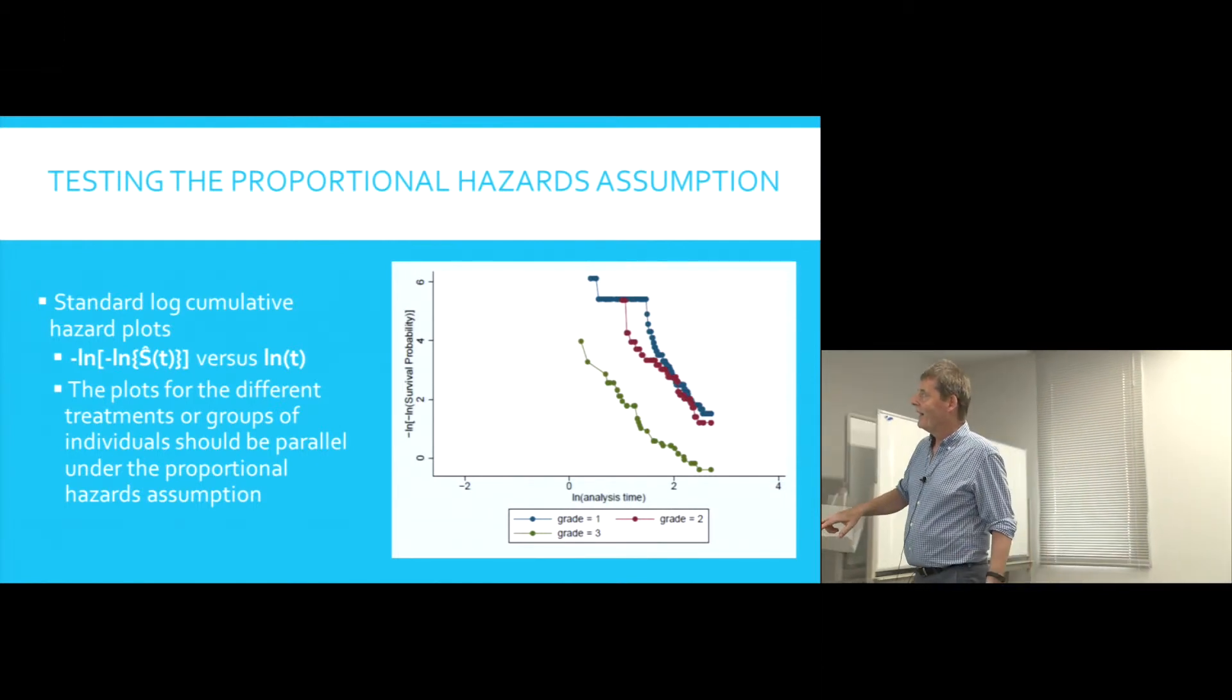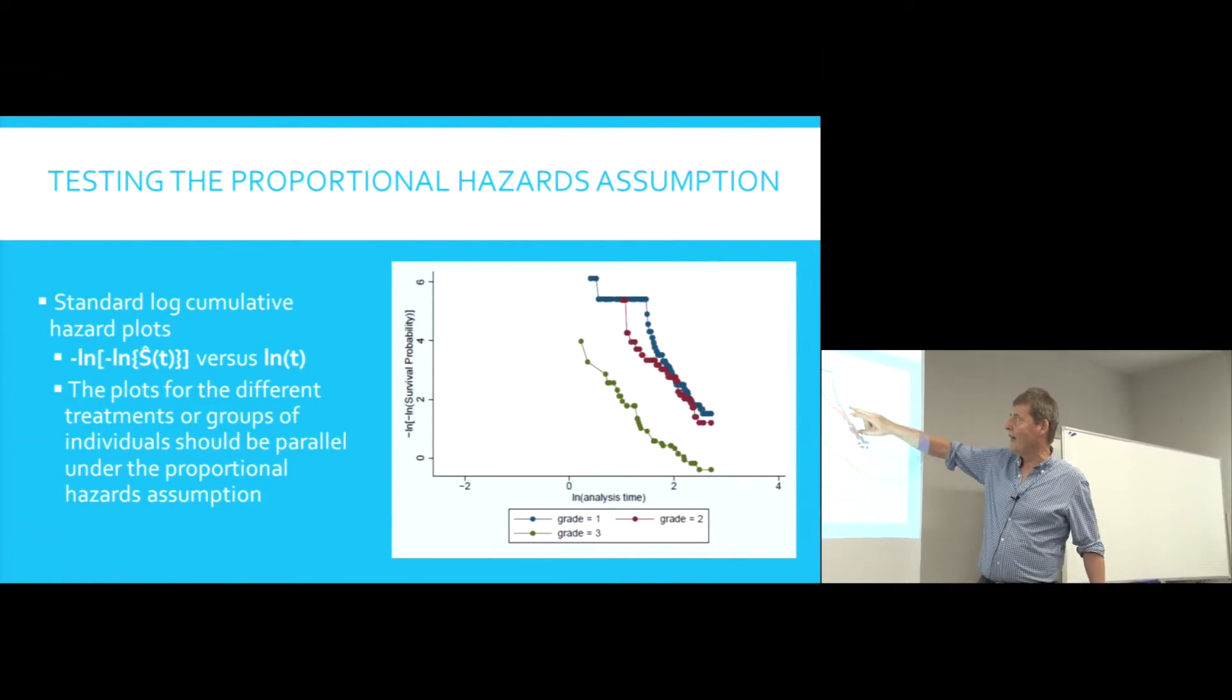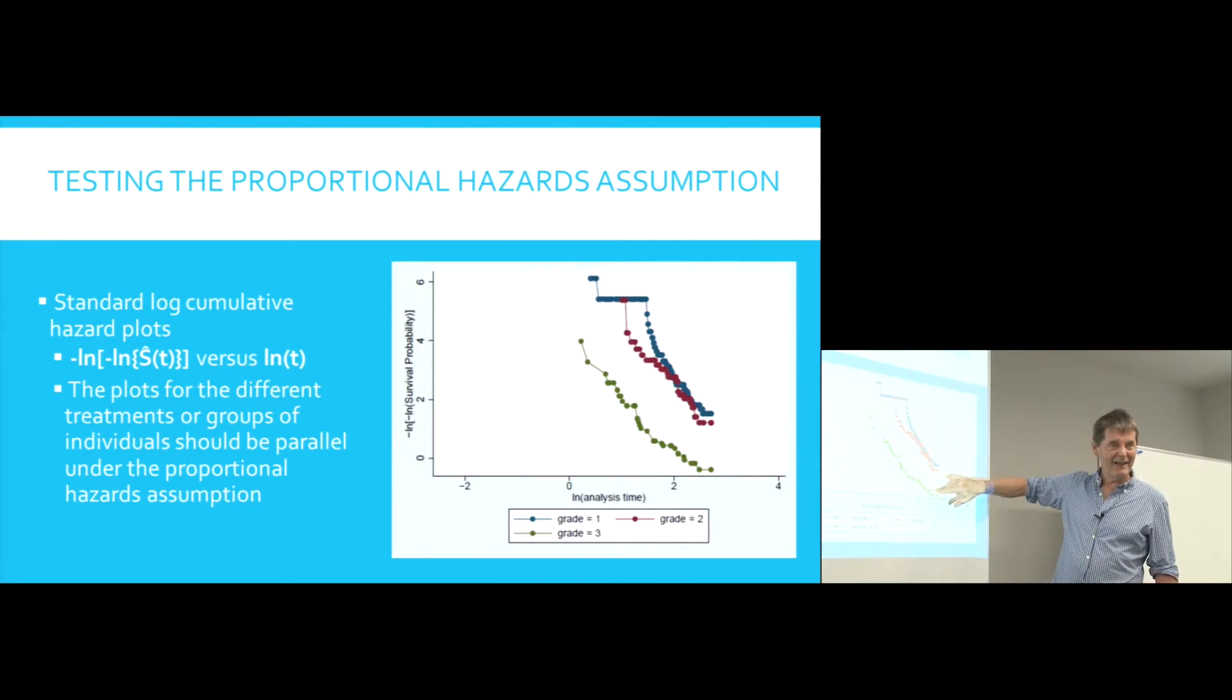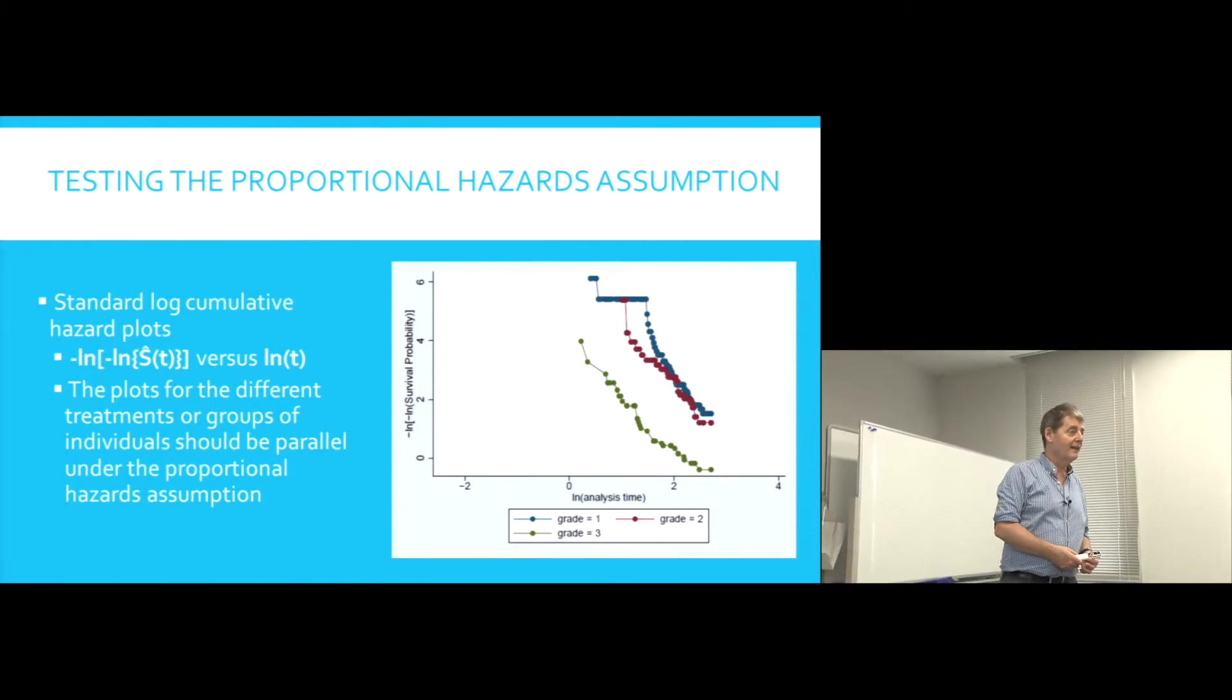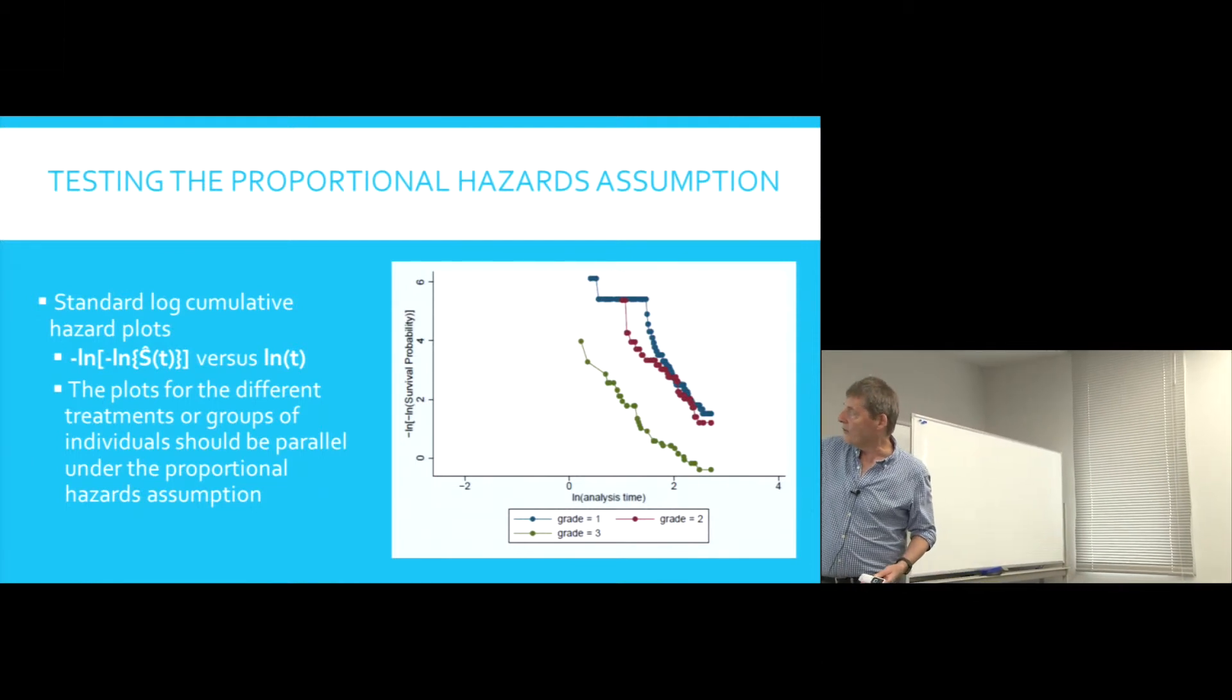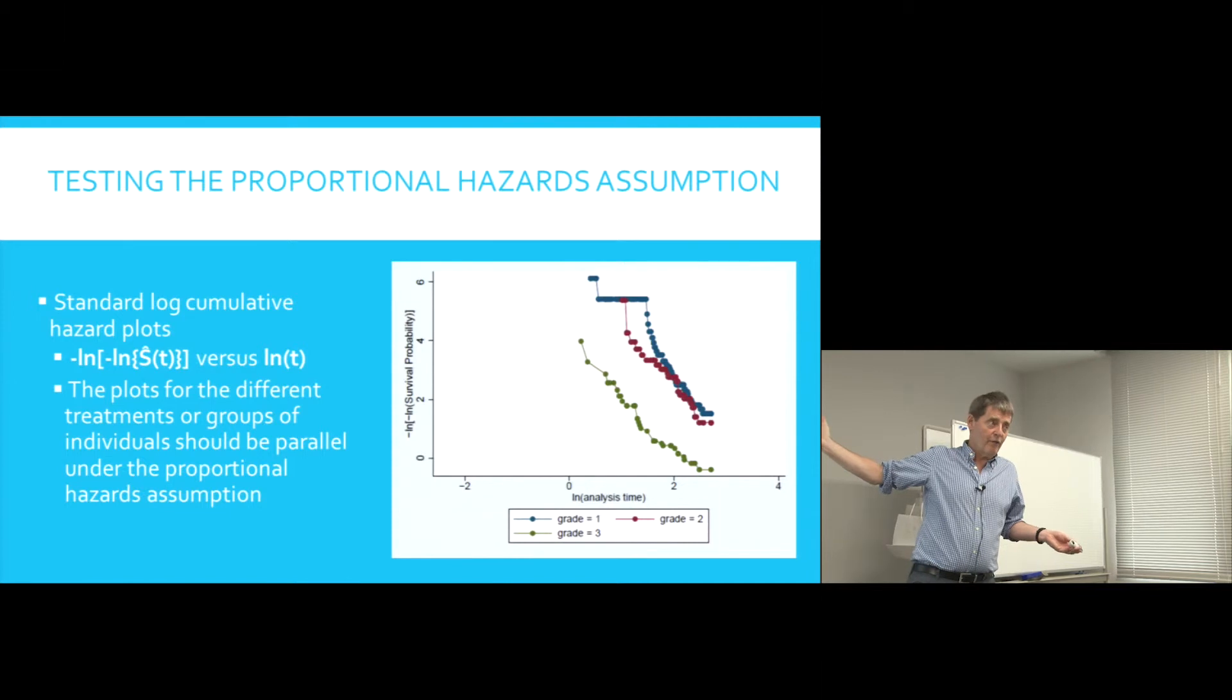And so if you could almost ignore the blue line, just think of the green line, that's one group, and the red line, another group. That's sort of broadly parallel. But if we look at the blue line, quite clearly the blue line is not parallel to the red line. They converge indeed more than that, they cross over. So this would be an example, proportional hazards is not fulfilled.